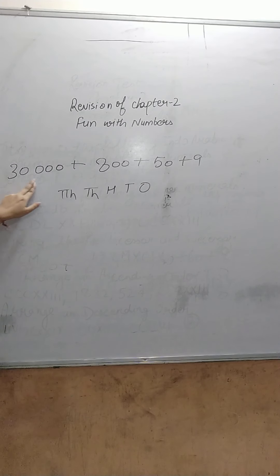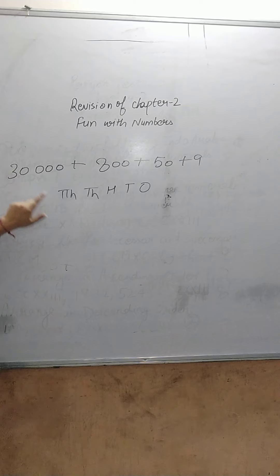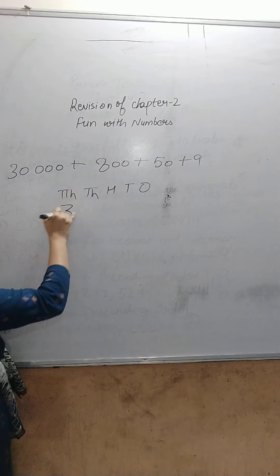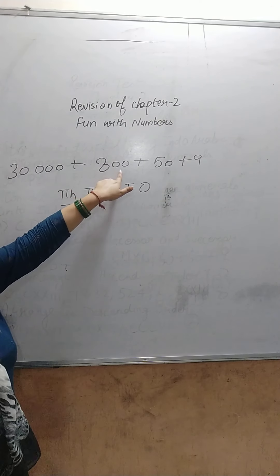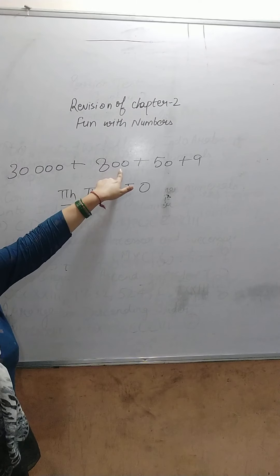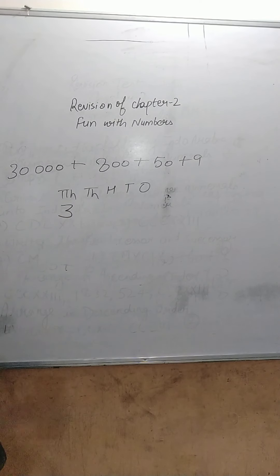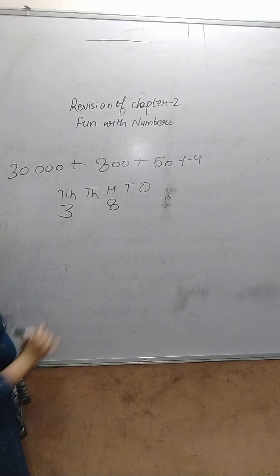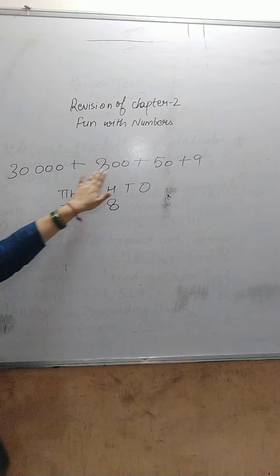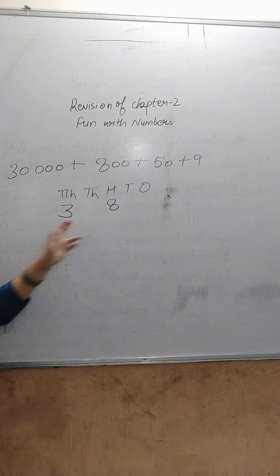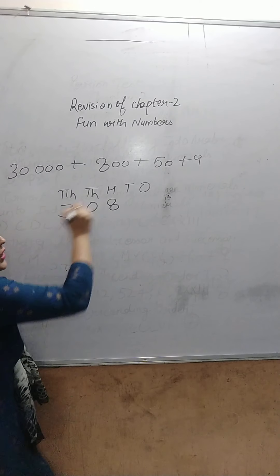30,000 is the value of the 10,000 place, so write 3 here. Now there is 800, which is the value for the 100's place, so write 8 on the 100's place. There is no digit for the 1,000's place, so we put 0 there.